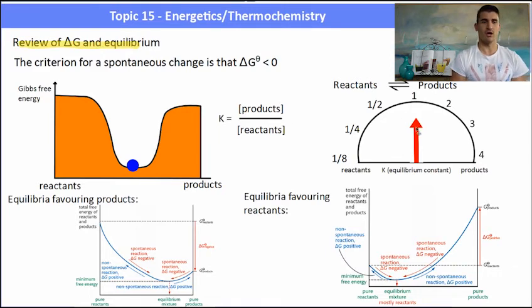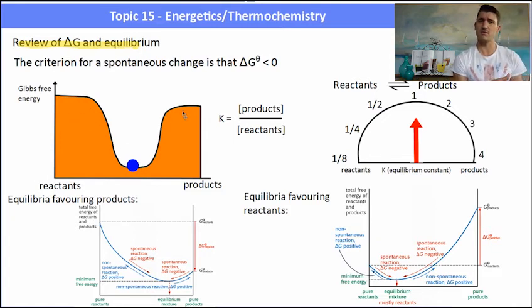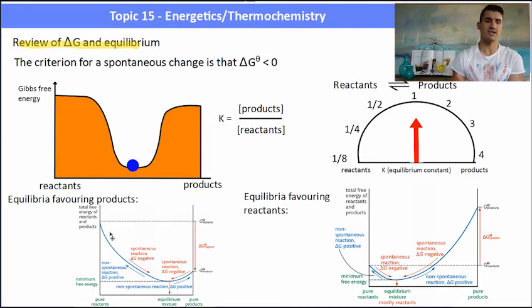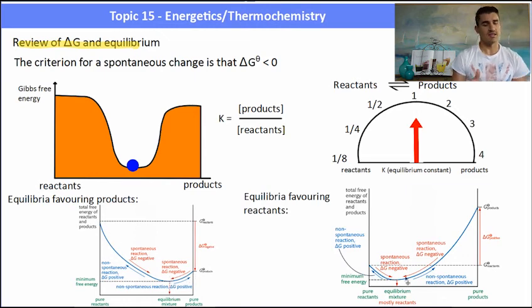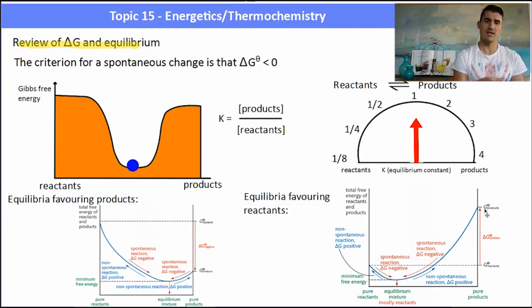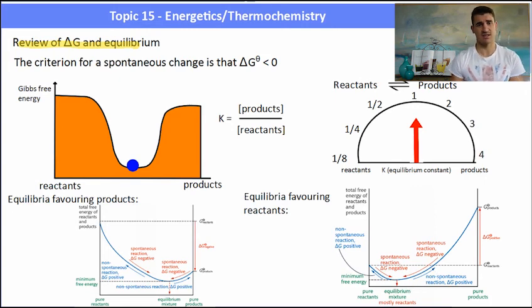A quick review of delta G in equilibrium, which comes up in Topic 17. At equilibrium, K = 1 and the minimum Gibbs free energy lies between reactants and products. If equilibrium favors the products, the minimum delta G lies very close to the products, meaning a reverse reaction must overcome a lot of Gibbs free energy — it's much easier to form products. If equilibrium favors reactants, the minimum delta G lies toward the reactants, so it's much easier to turn into reactants than products.